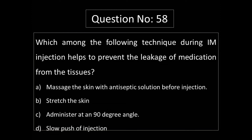Option B: Stretch the skin. When the skin is stretched during injection using the Z-track technique, after the injection is withdrawn the skin returns to its normal position, creating a zigzag arrangement in the tissue that prevents the medication from leaking back through the tissue. The injection is administered at a 90-degree angle for IM position.